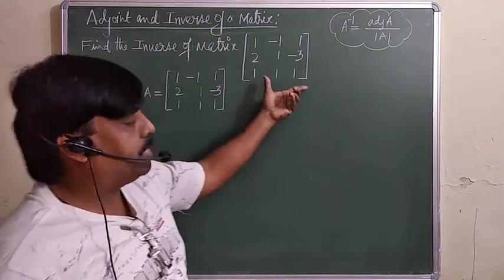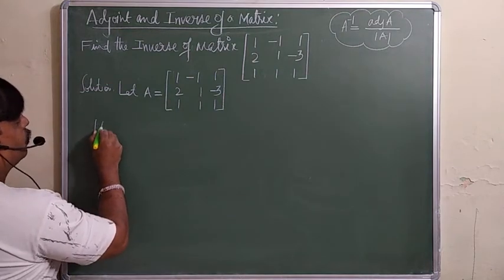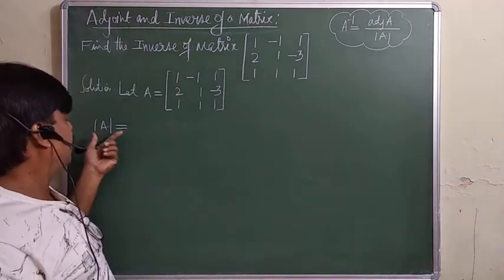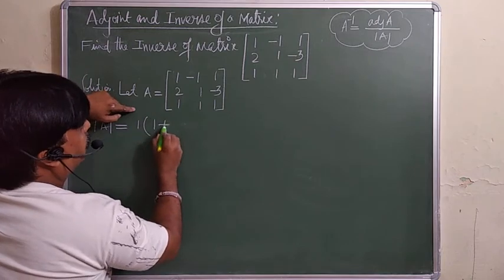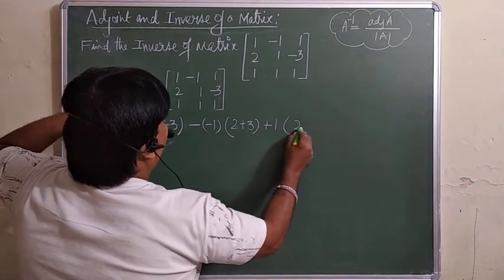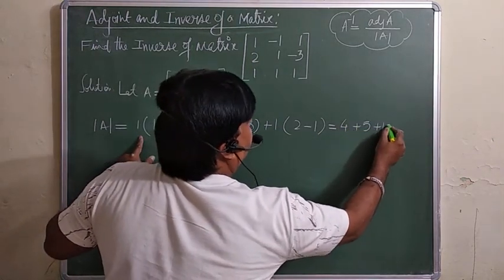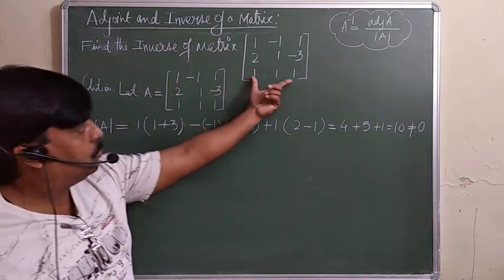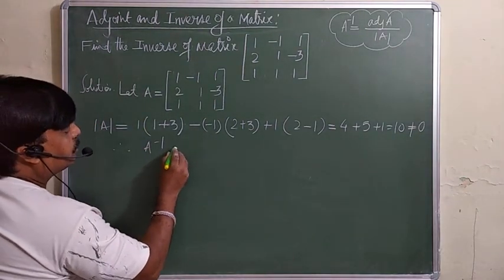Now for the worked example: find the inverse of the given matrix. Let A equal the given matrix. First find the determinant, because the inverse exists only if det(A) ≠ 0 (non-singular). Computing: 1×(1+3) − (−1)×(2−(−3)) + 1×(2−1) = 4 + 5 + 1 = 10, which is not equal to 0. Therefore A is non-singular and A inverse exists.